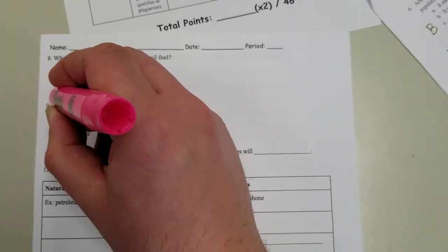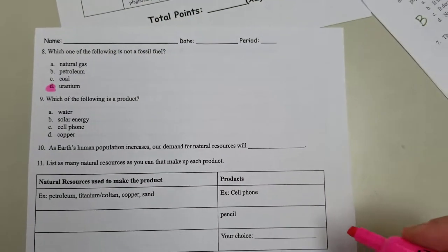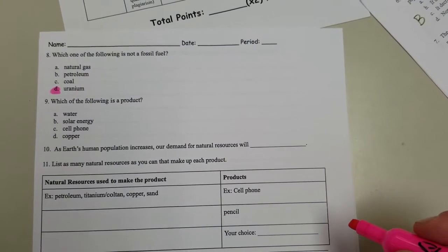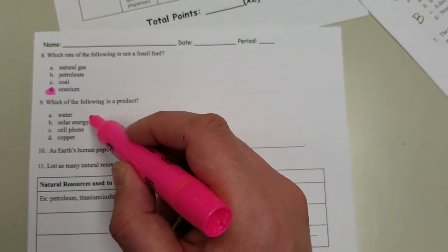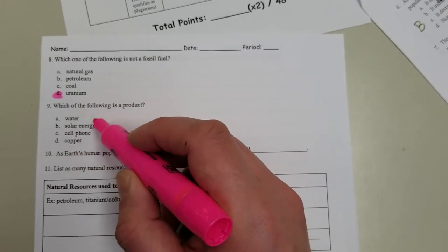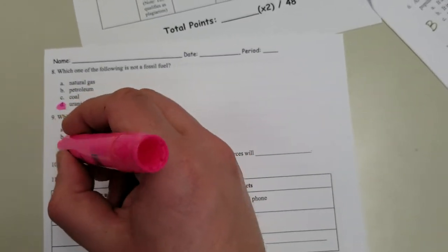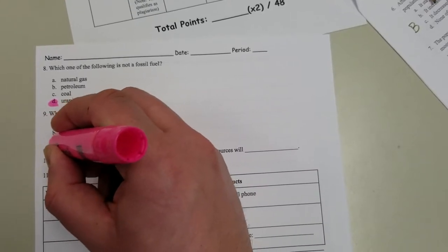Which of the following is a product: water, solar energy, cell phone, or copper? Water, solar energy, and copper are natural resources. Cell phone is made from natural resources.